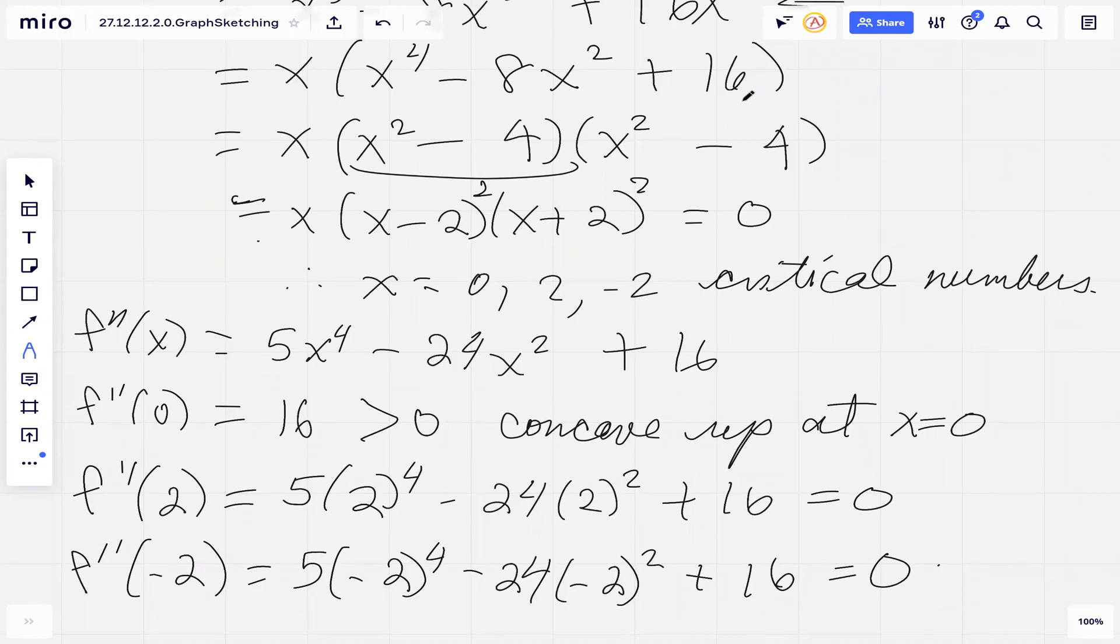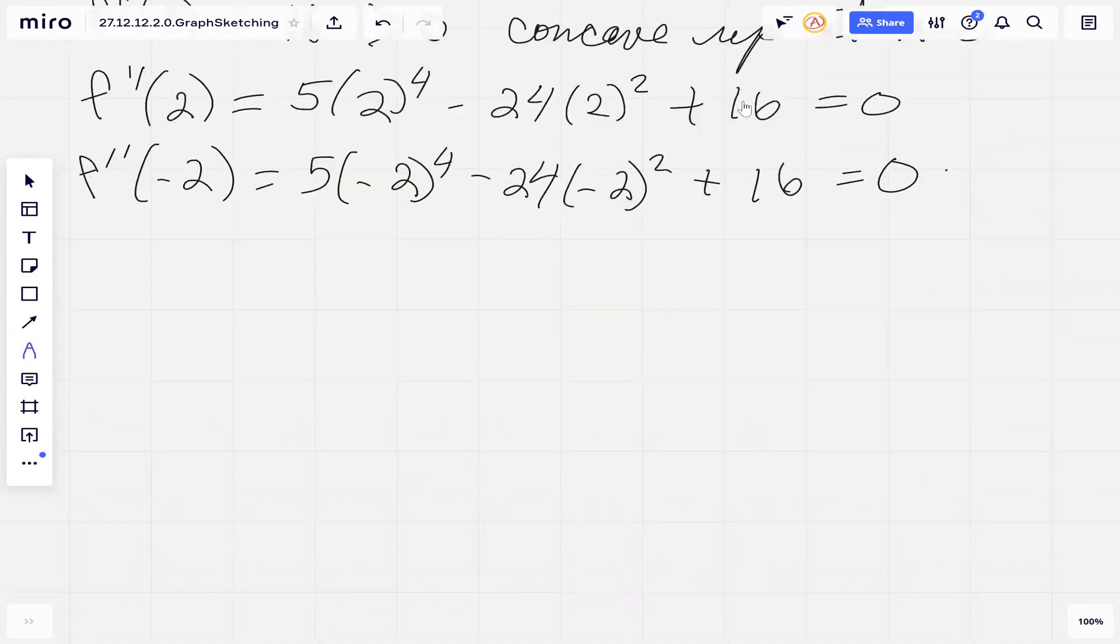So then what are we going to do? Let's look at how the derivative changes on these intervals. We're going to draw a number line with our critical numbers and write out the factors of our first derivative. Then we have the product of these three factors is our first derivative. From here, we can determine whether the first derivative is positive or negative. This will give us an idea if our function is increasing or decreasing, what it looks like visually.